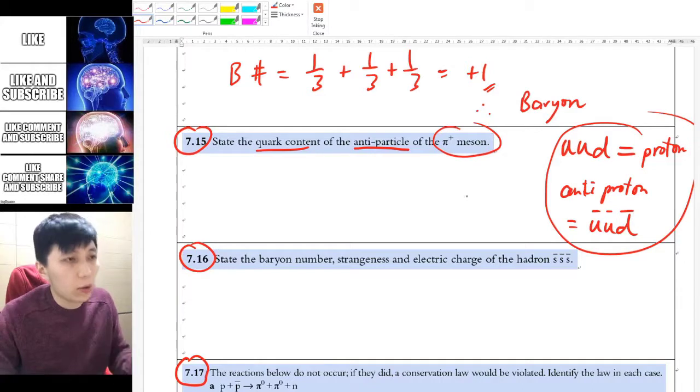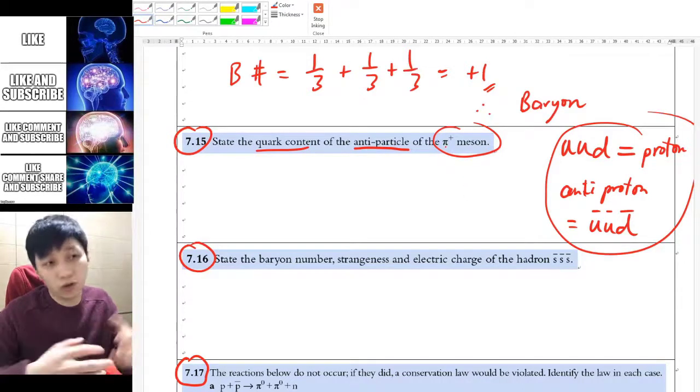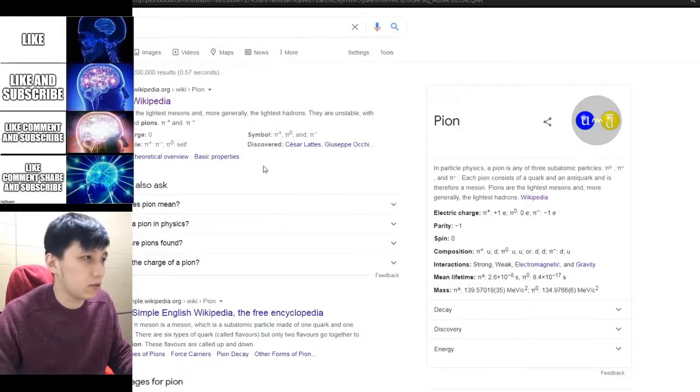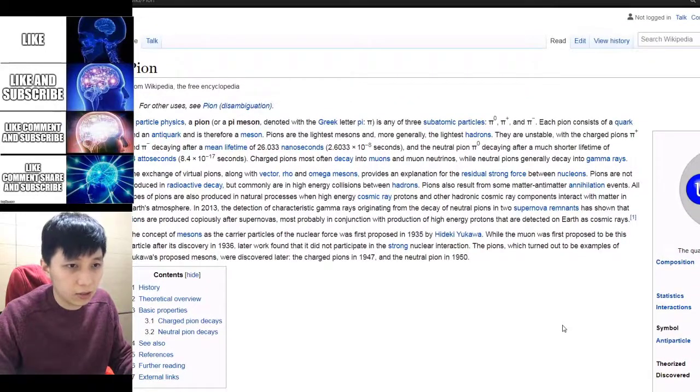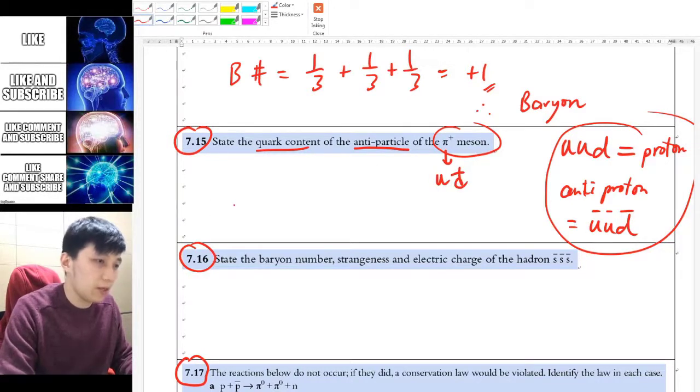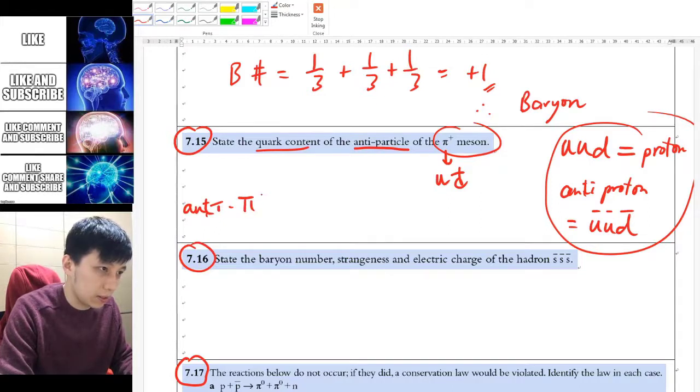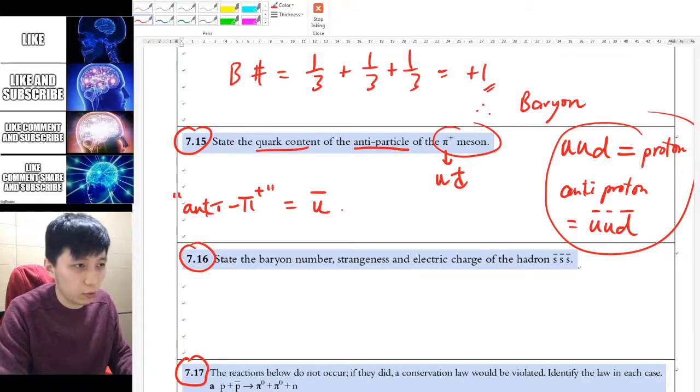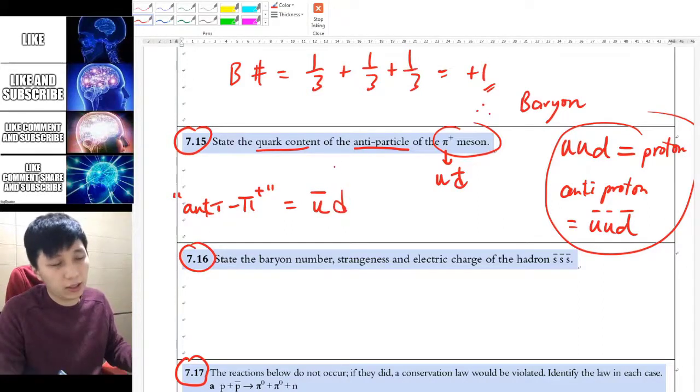However, since you're not told the quark content of this pi-positive, which is called pion officially, there isn't a way you can work it out. This is the textbook's fault—they should give you the quark content. In this case, let's just Google it. This is called pion, P-I-O-N. On Wikipedia you'll find it's anti-U and D. So for its anti-pion, the content is simply reverse the quark. This becomes anti-U and this becomes the regular down quark.